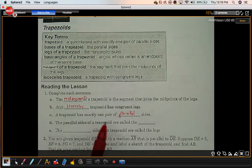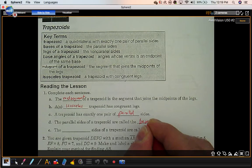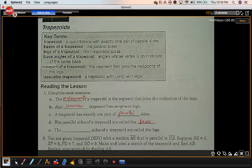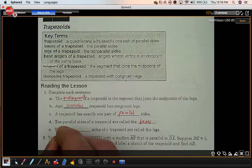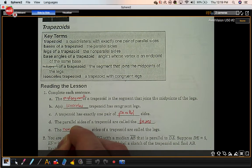Parallel sides of a trapezoid are called the bases. The blank sides of a trapezoid are called the legs. These are the non-parallel sides.